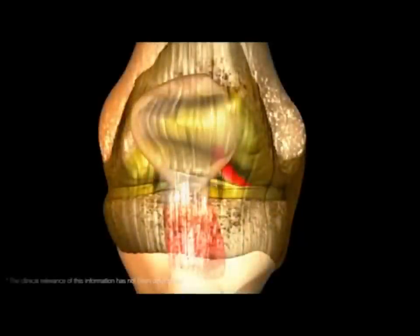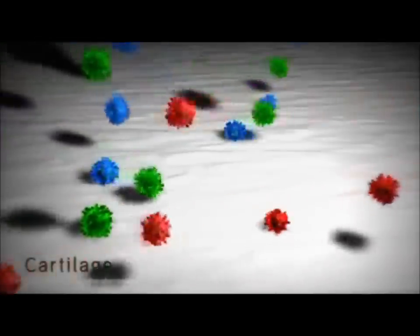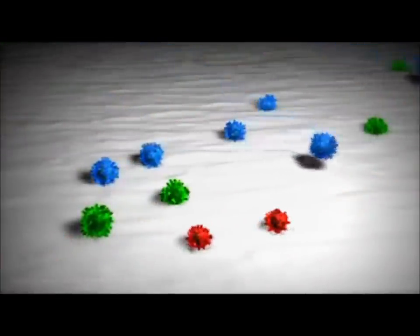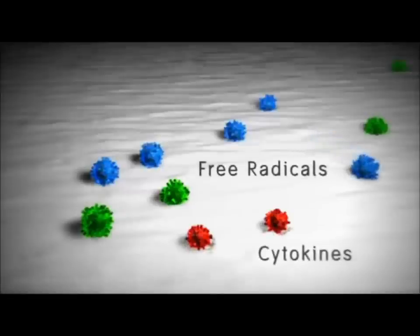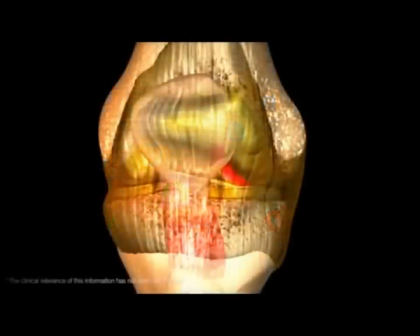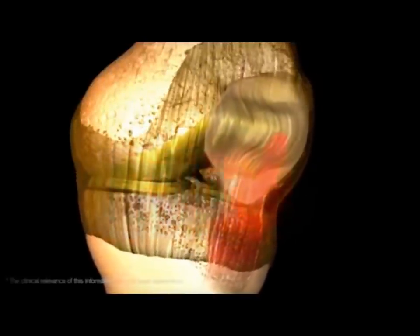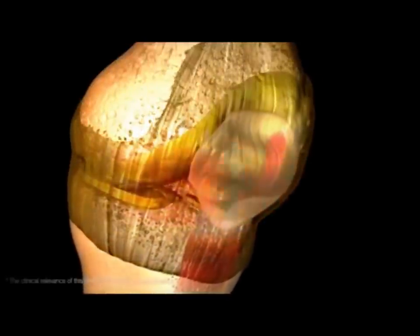In an osteoarthritic knee, however, the natural HA produced by cells in the synovial membrane can break down. This breakdown can trigger inflammation, leading to a release of pro-inflammatory factors that degrade cartilage — factors such as cytokines, free radicals, and metalloproteinases. The pain associated with cartilage degradation often inhibits patient mobility, leading to further deterioration and more extensive inflammation.